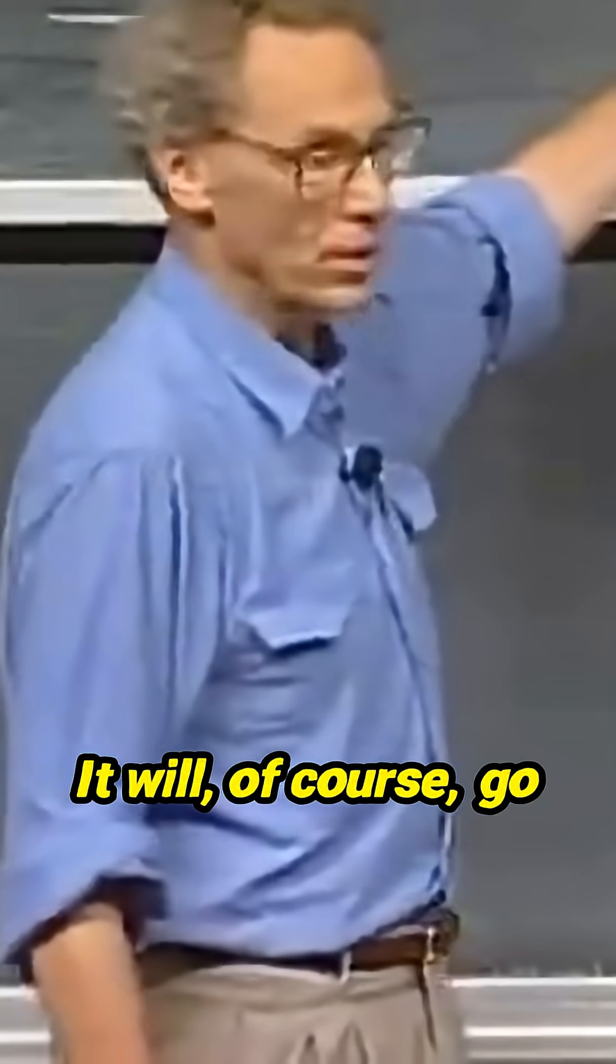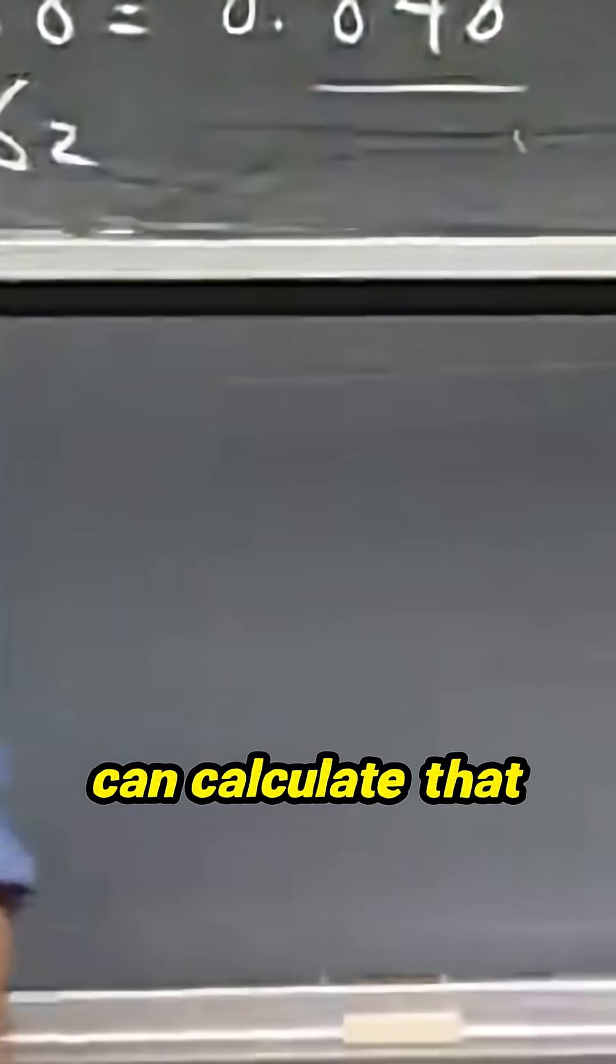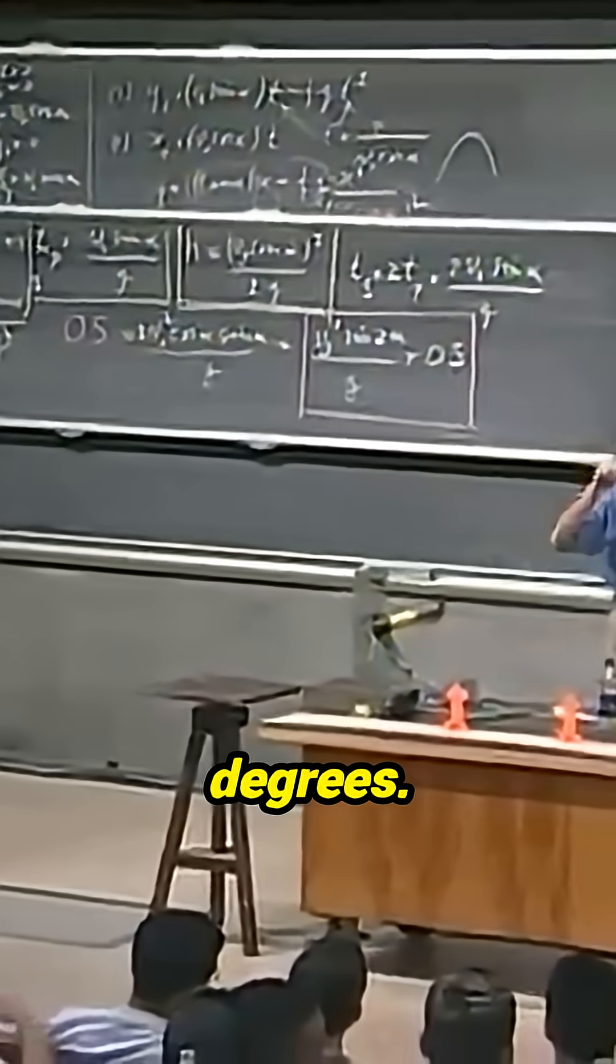It will, of course, go much higher. You can calculate that because you will have to use this for the equation for the height. And that goes with the sine of alpha. The sine of alpha for 60 degrees is way higher than 30 degrees.